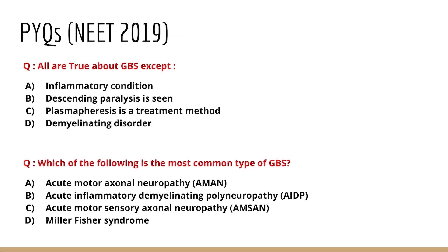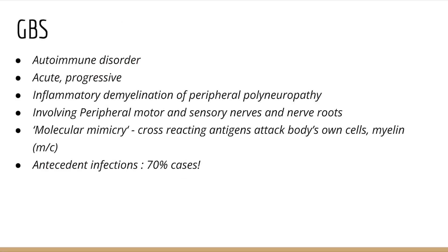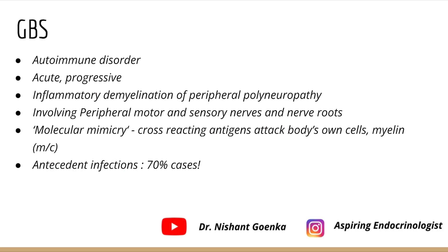To answer such questions you need a thorough idea about GBS, because they ask you about facts — which is true and which is false. We'll quickly go through the important points about GBS, summarize them, and then come back to the questions. GBS is an autoimmune disorder where the body attacks its own cells. It is acute, progressive, and involves inflammatory demyelination of peripheral polyneuropathy — mainly the peripheral motor and sensory nerves and nerve roots are affected.